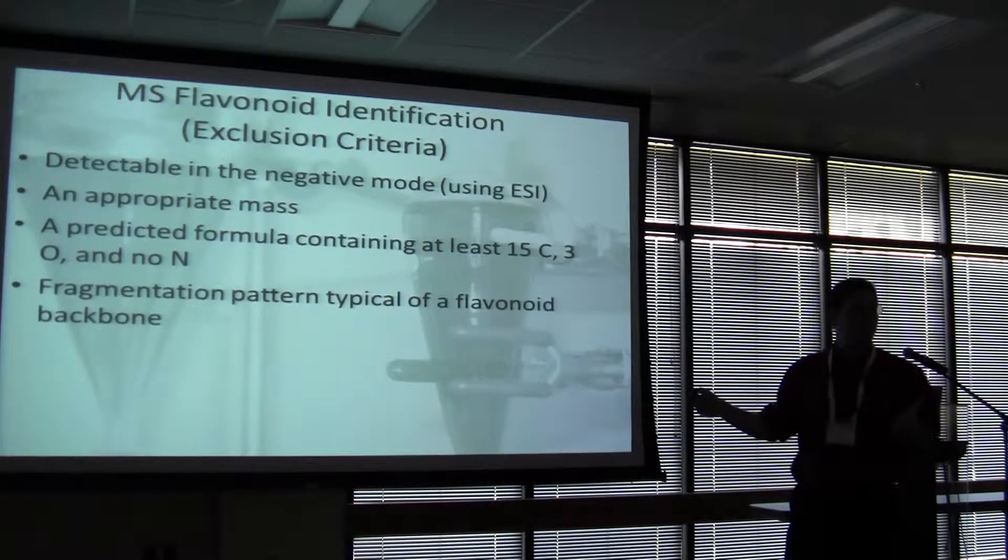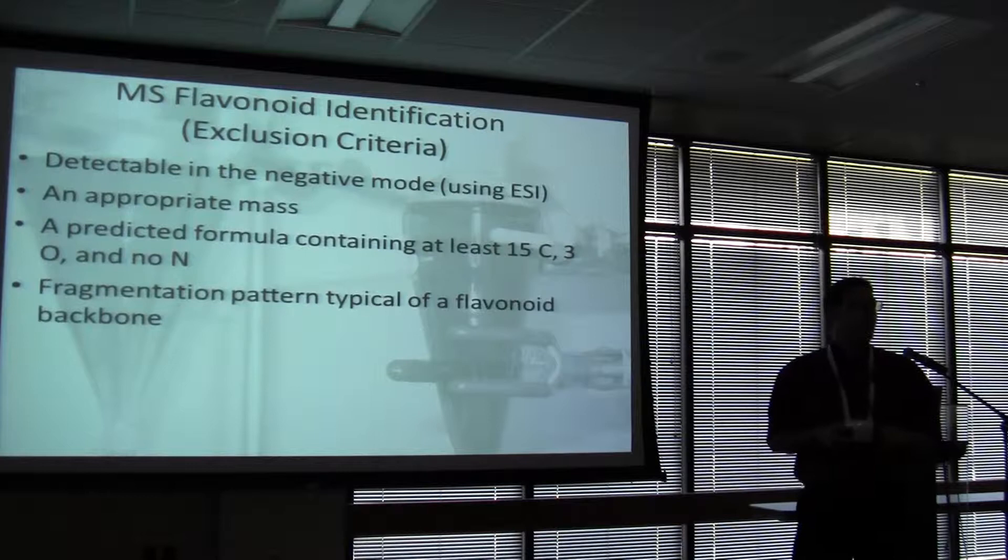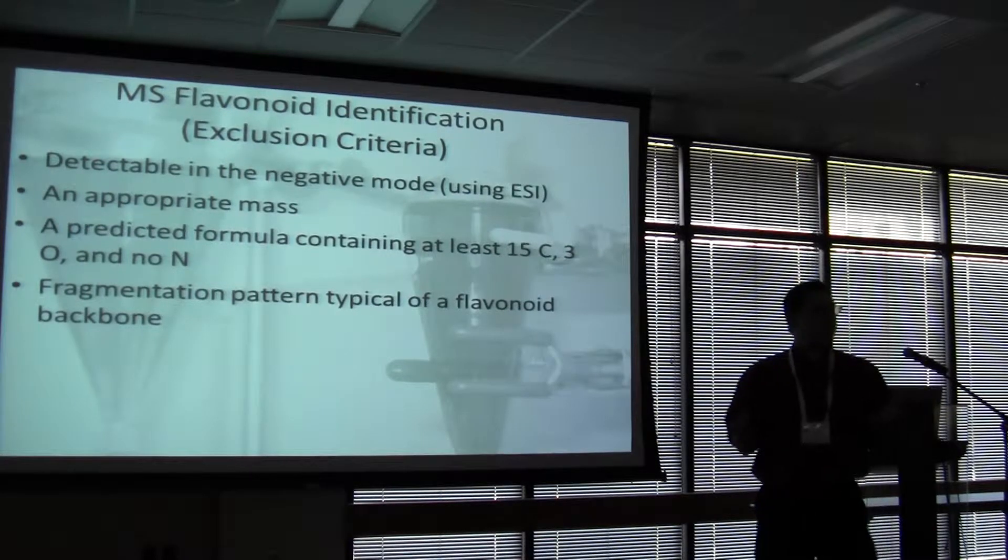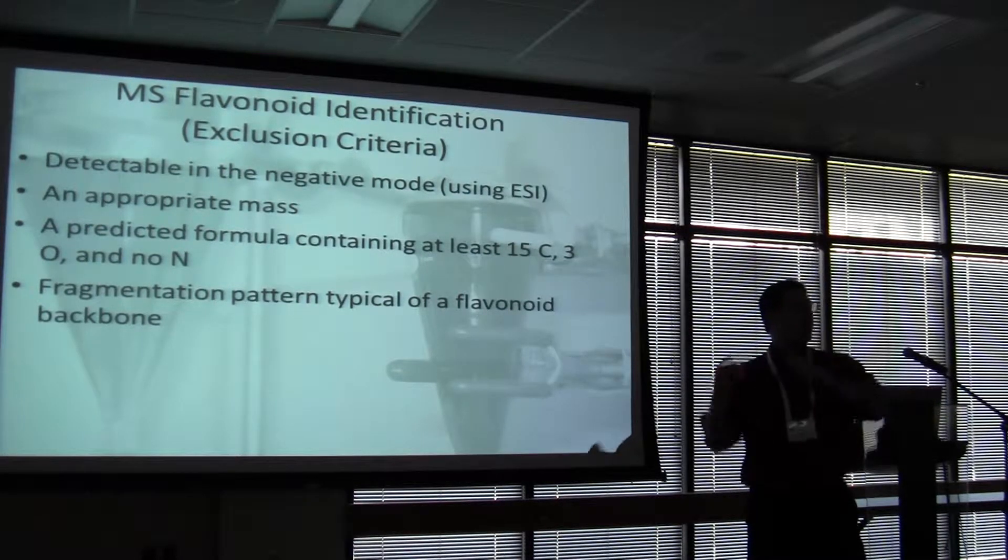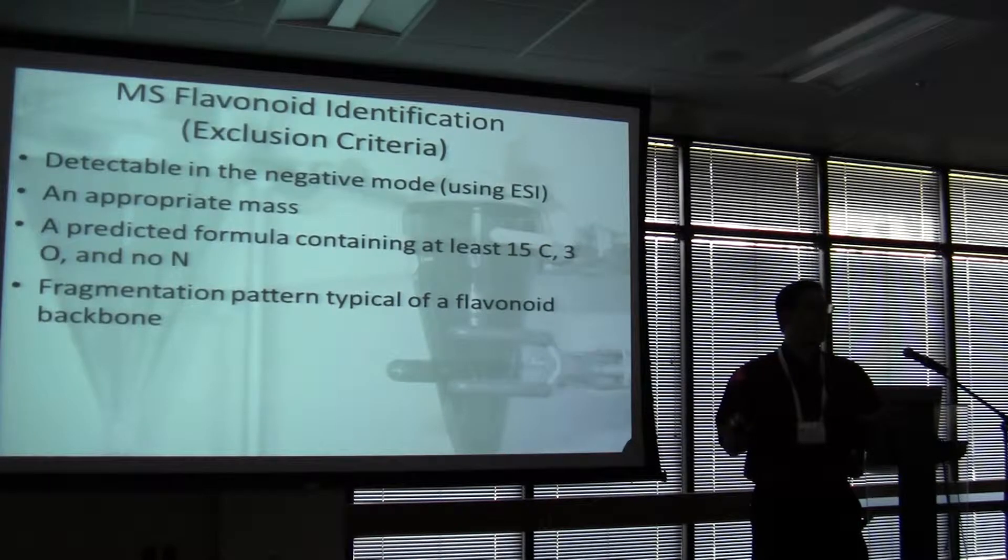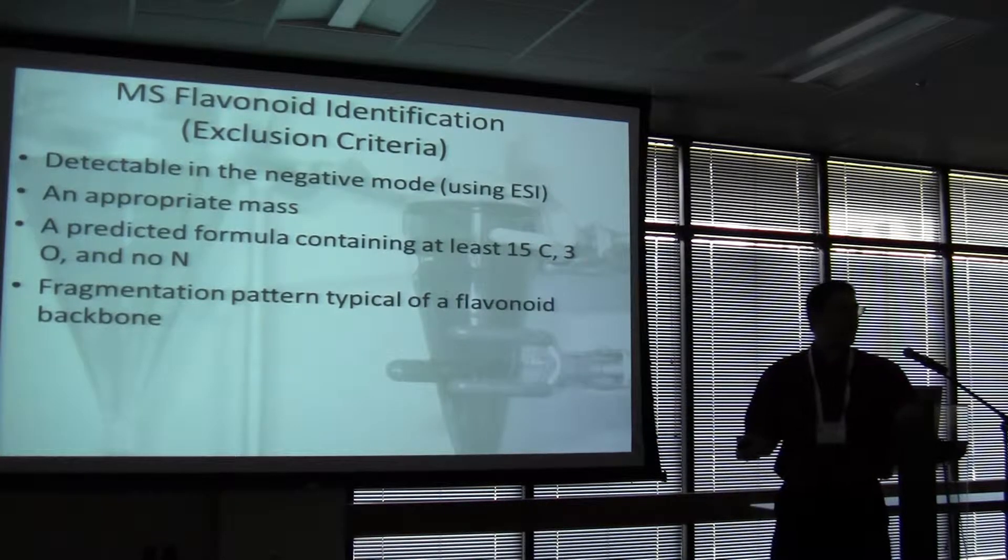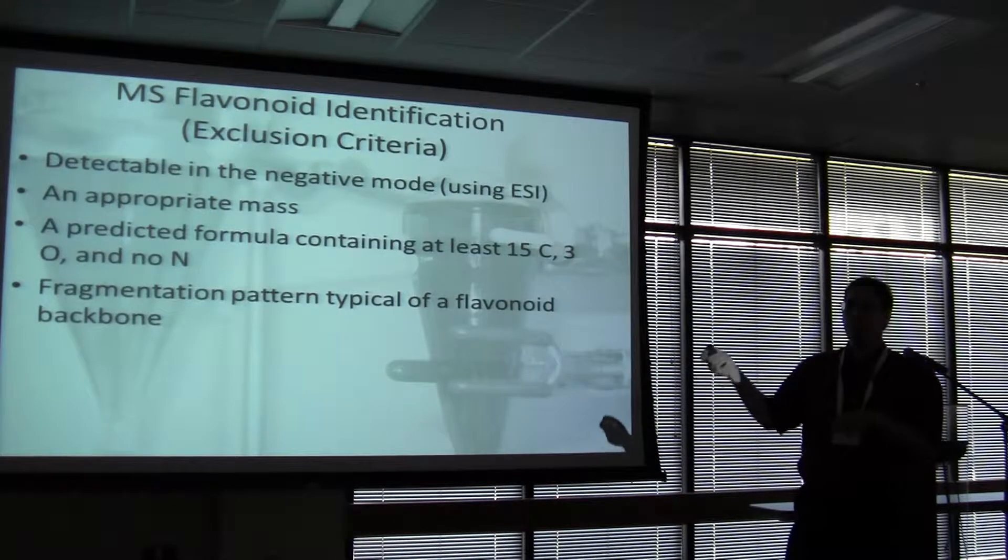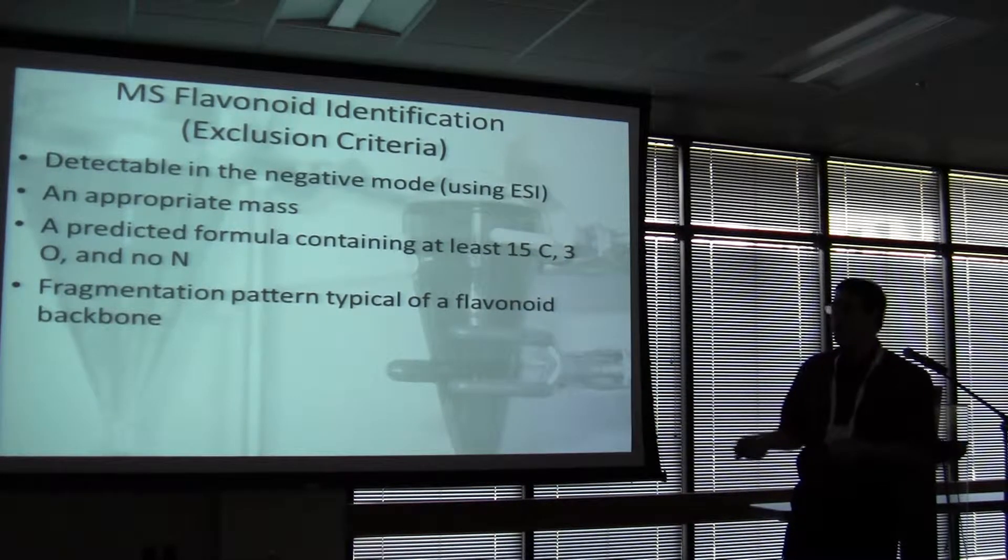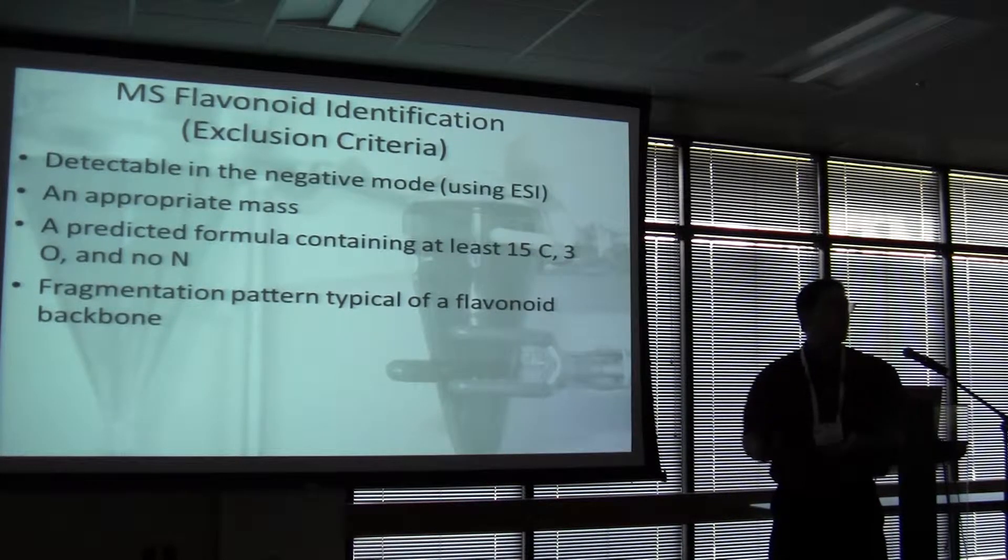But we can have a few exclusion criteria. And I'm getting a little short on time, so I'm not going to go through all of these. But we can process data by looking at the peaks, excluding them as not a flavonoid, or including them as a possible flavonoid, and also by looking at the fragmentation pattern, possibly even a probable flavonoid.